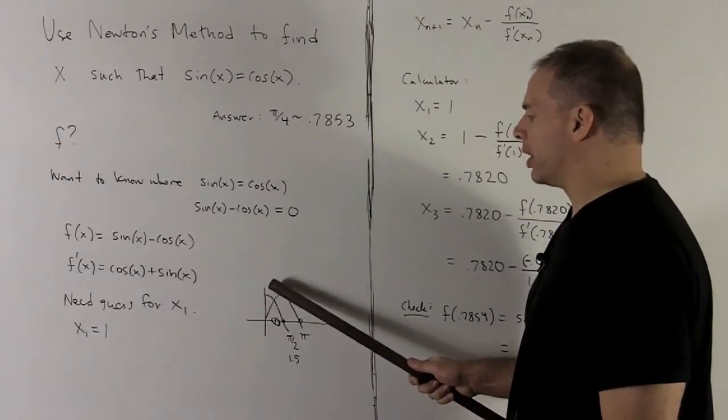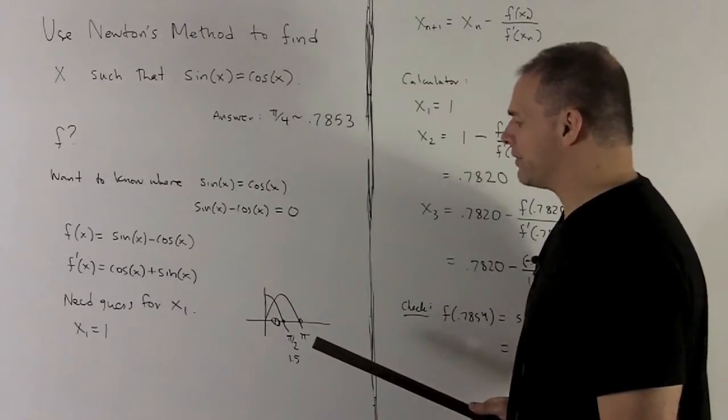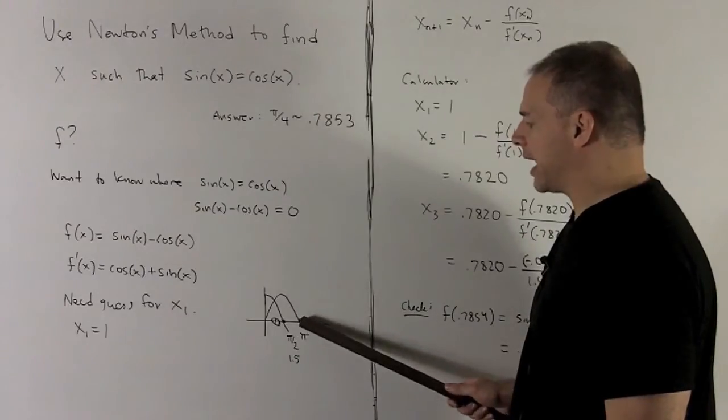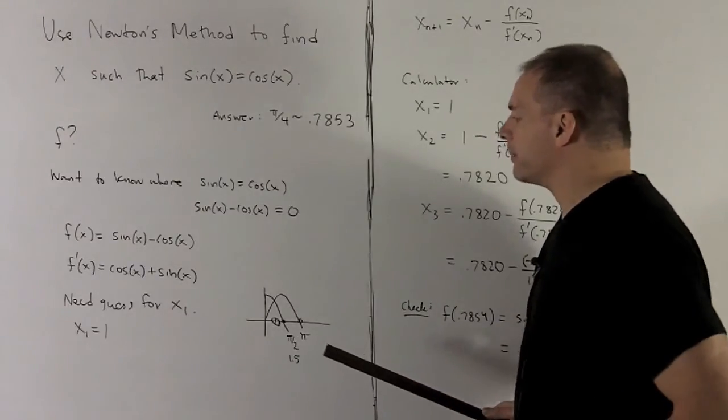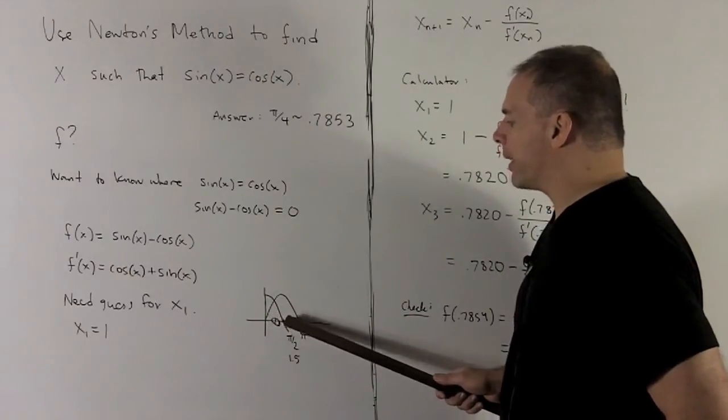Cosine starts up here and comes down, crosses the axis at pi halves. And then sine is going to go up off of 0 and then come back down, cross the axis at pi. So we see that these are going to cross somewhere between 0 and pi halves.